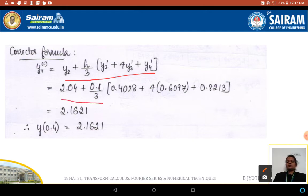Respectively these values are substituted to get 2.1621. So we have applied the corrector formula once only.